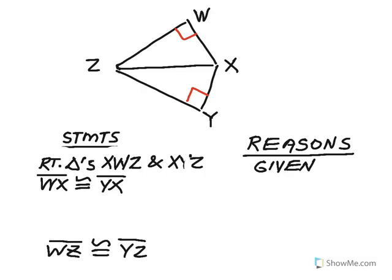Here's a short proof using the Hypotenuse-Leg theorem. I'm given two triangles XWZ and XYZ that are both right triangles, placed back to back. I'm told that segment WX is congruent to segment YX. The hypotenuse is always across from the right angle, so segment ZX is actually the hypotenuse to both triangles and is congruent to itself by the Reflexive Property.